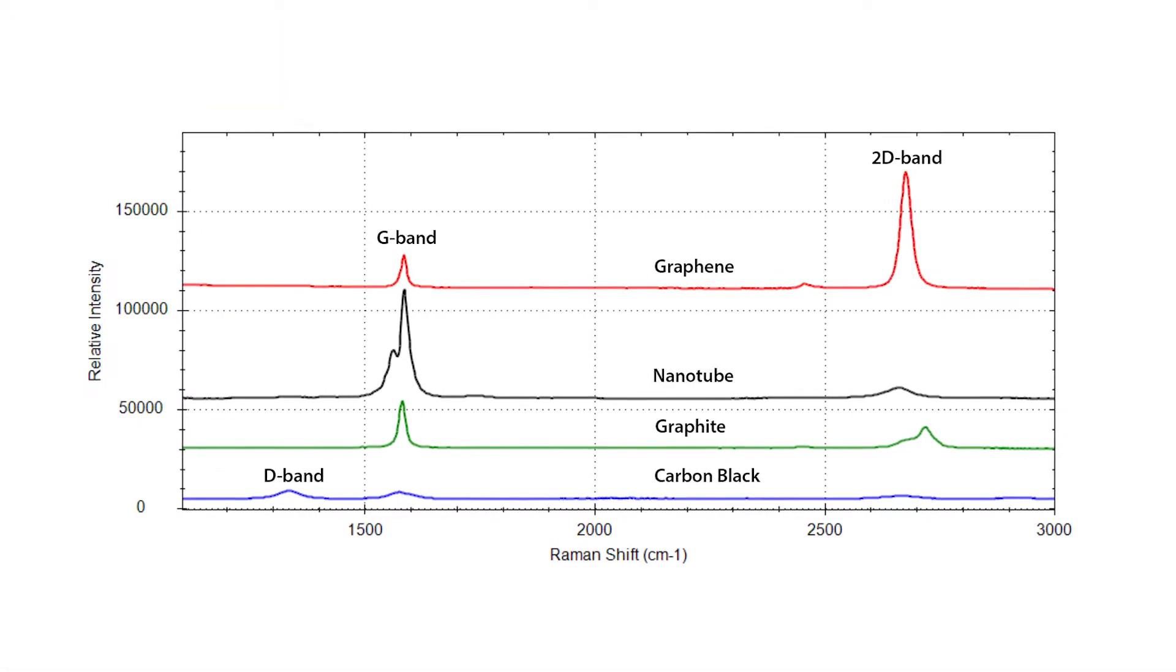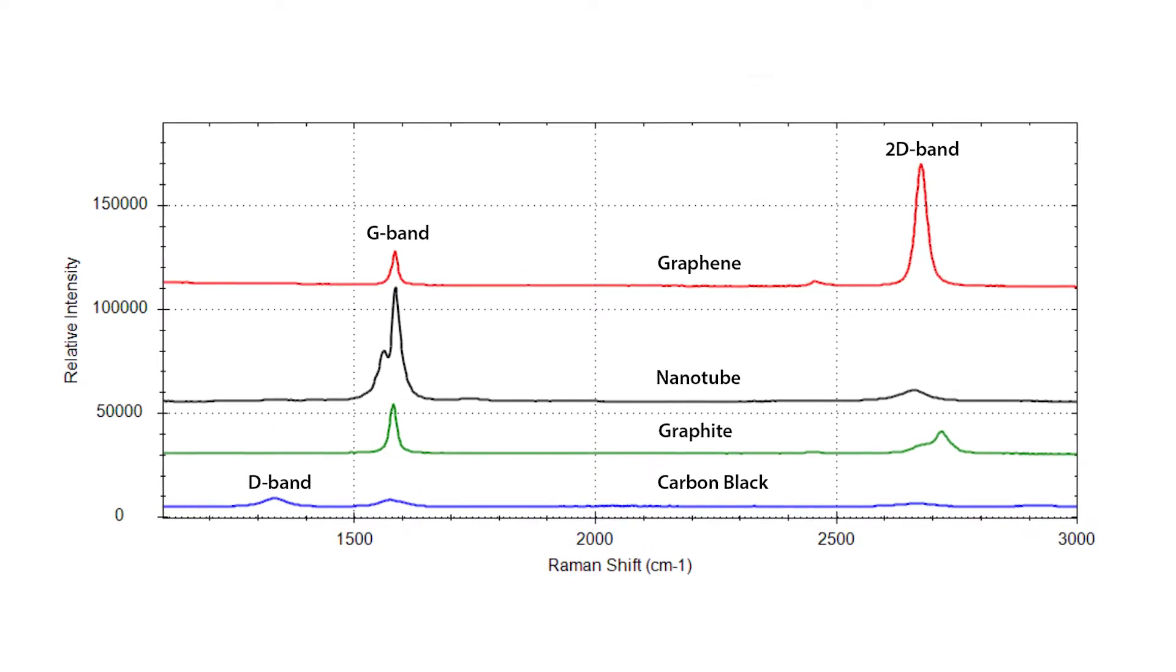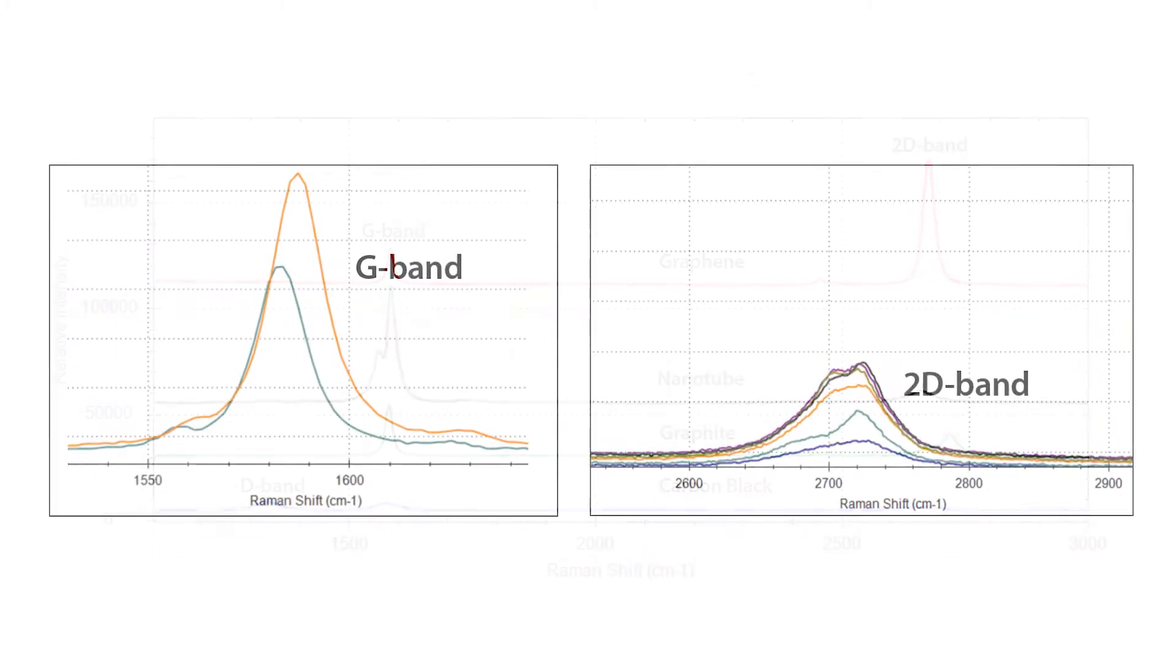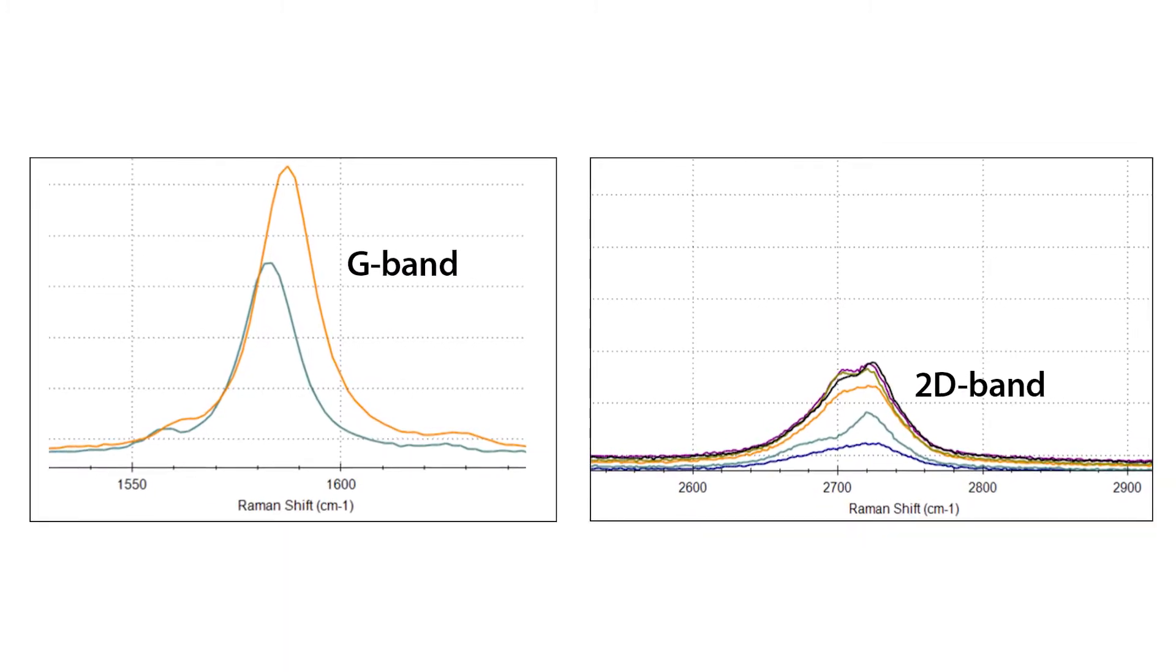Although the Raman spectra of carbon nanomaterials are typically characterized by only three peaks, the intensities, widths, and positions of these peaks provide important information regarding the layers, crystallinity, and level of disorder within a sample.